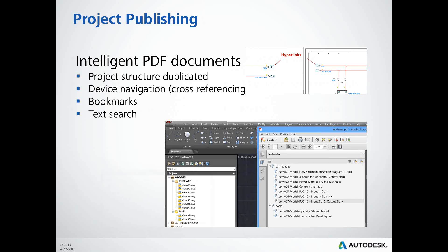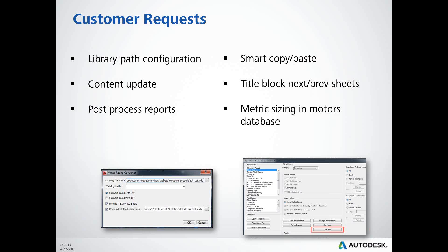In addition to those major changes, we've also made smaller improvements. The first is library path configuration. In the past, when sending a project file to a different user or department with library files in different locations, you had to reset paths manually. The new configuration tool uses a variable for the default file location, so when transferring projects, that information stays viable without having to change paths.